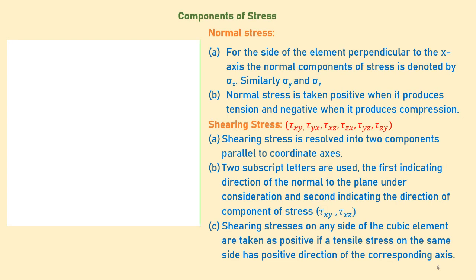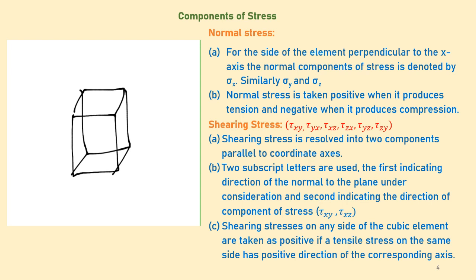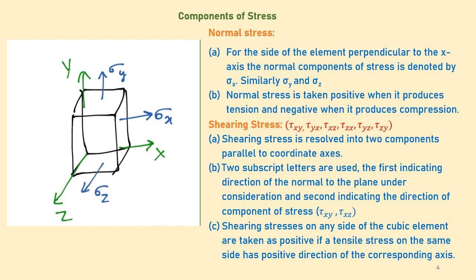Now let me explain normal stress and shearing stress with this diagram. Let us consider a cubical element, and define the x-axis, y-axis, and z-axis. For the side of the element perpendicular to the x-axis, the normal component of stress is denoted as sigma x. Similarly, the normal stress on the face perpendicular to the y-axis is sigma y, and on the face perpendicular to the z-axis is sigma z.